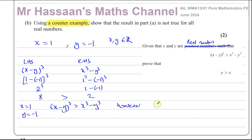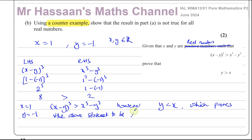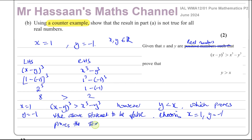However, in this case y equals negative 1 is less than x equals 1, so y is not greater than x. This proves the above statement to be false. Choosing x equals 1 and y equals negative 1 serves as a counter-example. A counter-example is just one example which shows the statement to be false — and that's the answer to part b.